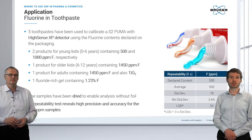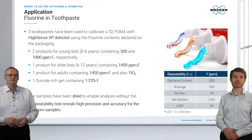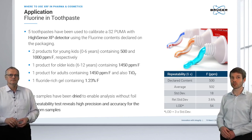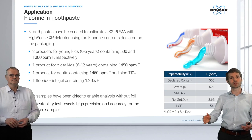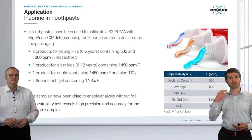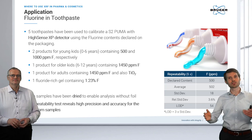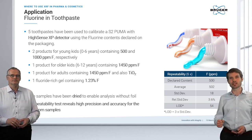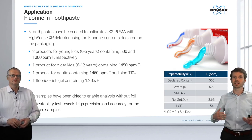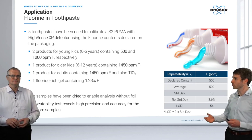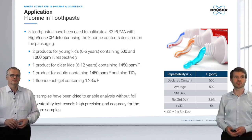Another example use case of XRF in cosmetics is toothpaste — specifically fluorine in toothpaste. We all know why fluorine is added, and younger children get a lower amount in their toothpaste. We took a few from the store: one for very young children with just 500 ppm of fluorine, one for intermediate-age children, some for adults, and even one high-fluoride gel with up to 1.2–3% fluorine.